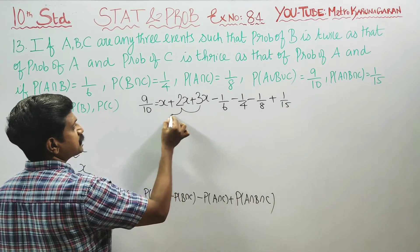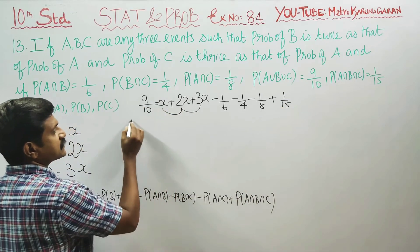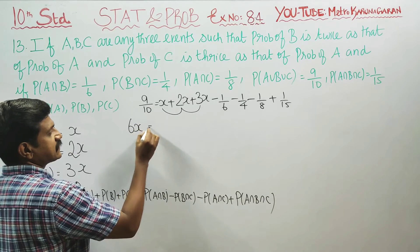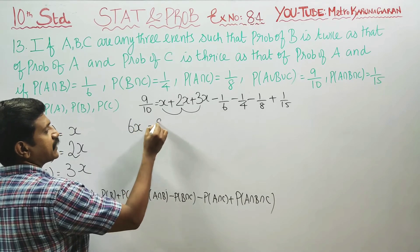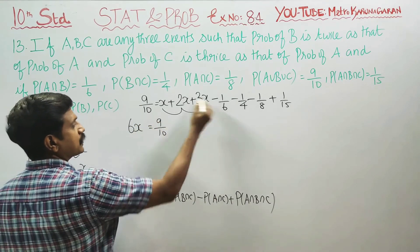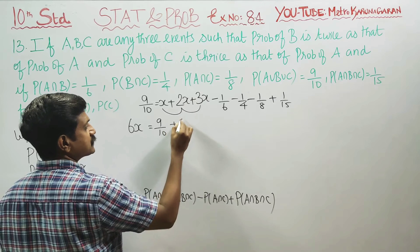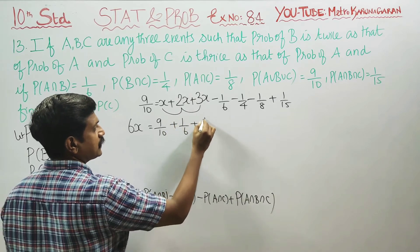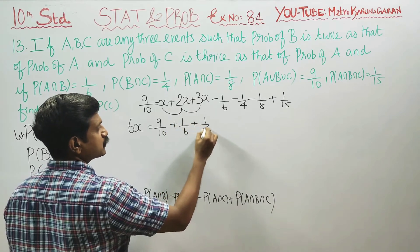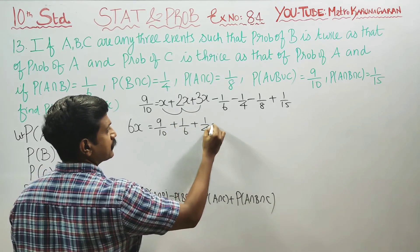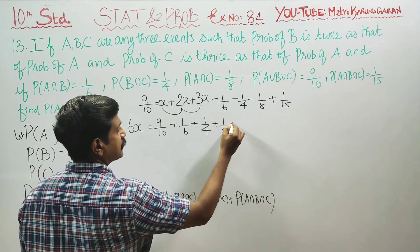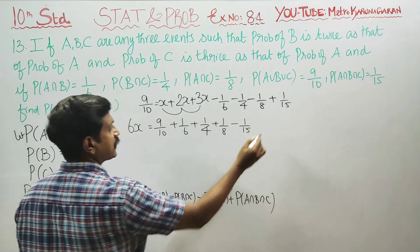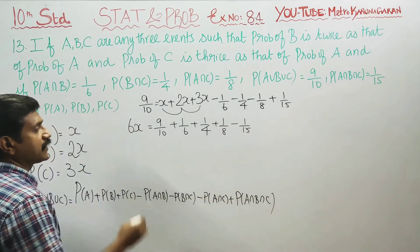3X plus 2X plus 1X gives 6X. So 9 by 10 equals 6X minus 1 by 6, plus 1 by 4, plus 1 by 8, minus 1 by 15.